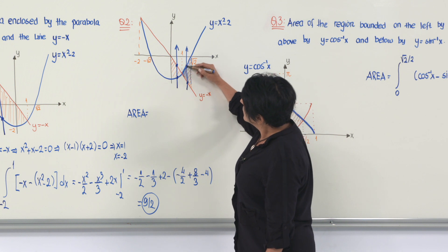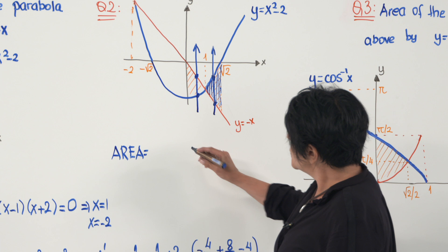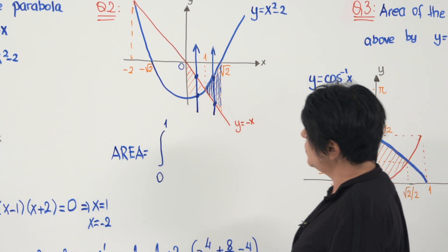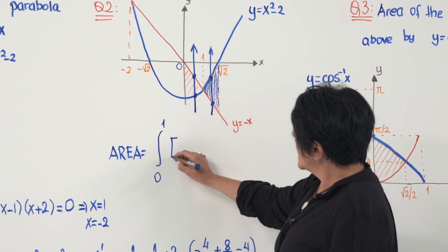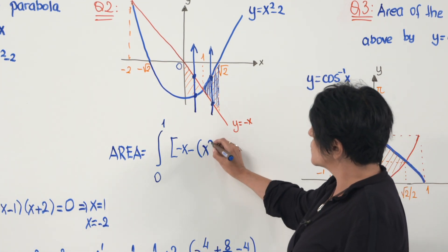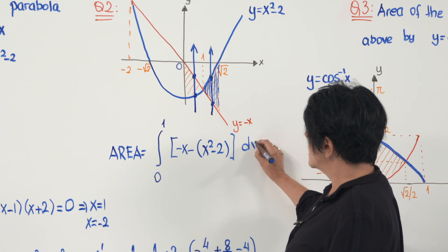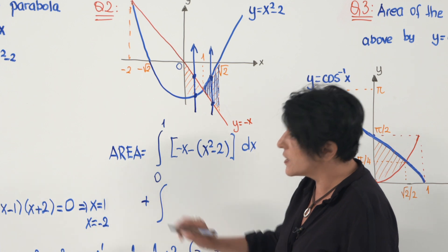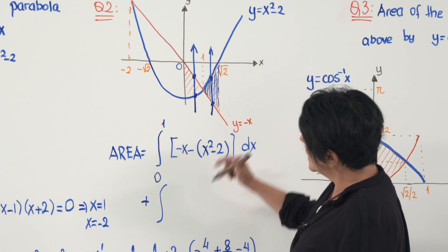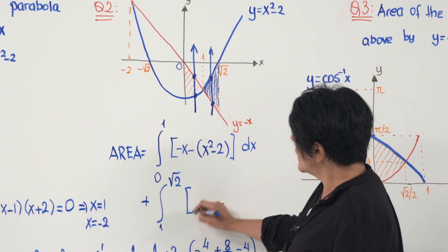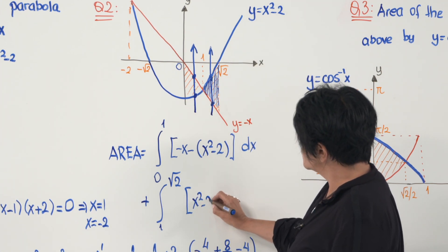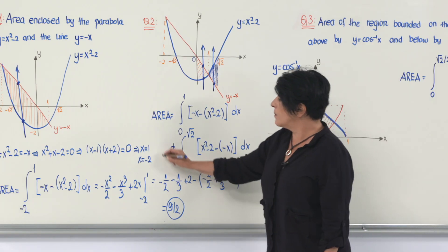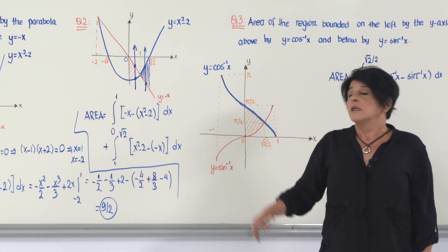For the orange sub-region, the integration limit goes from 0 to 1. The bigger curve is the line (−x) minus the smaller curve, the parabola (x² − 2), dx. That gives only the orange sub-region's area. For the blue sub-region, I need another integral where x changes from 1 to √2. This time the bigger curve is the parabola (x² − 2) minus the smaller curve, the line (−x), dx. The sum of these two integrals gives the total shaded area.